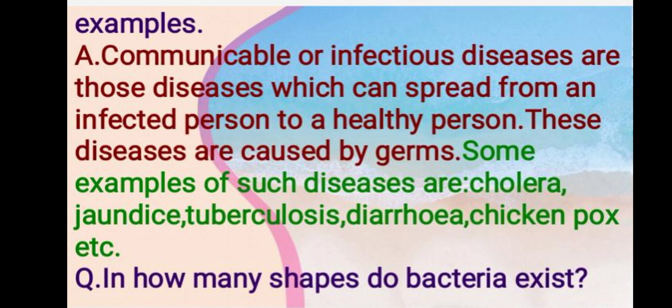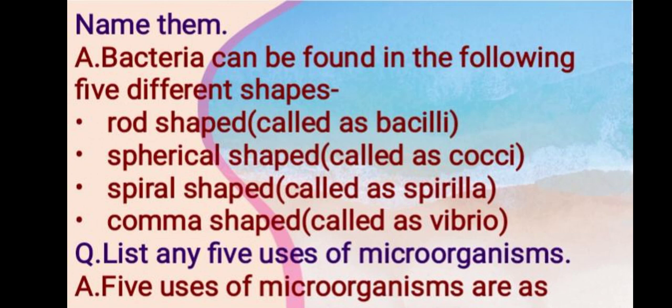Another question: in how many shapes do bacteria exist? Name them. Bacteria can be found in the following five different shapes: rod shape, called basille; spherical shape, called cocci; spiral shape, called spirilla; and comma shape, called vibrio.